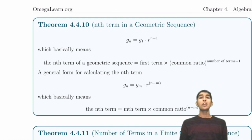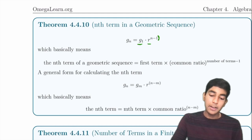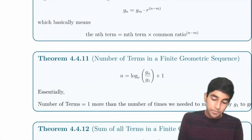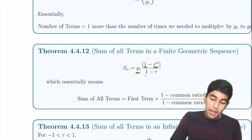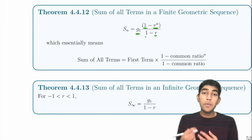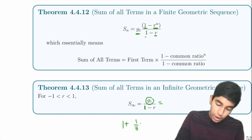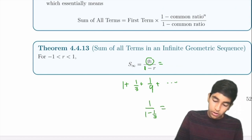Geometric sequences: the nth term is a₁ × r^(n−1). The sum of n terms is a₁ × (1 − rⁿ) / (1 − r). For an infinite geometric series with |r| < 1, the sum is a₁ / (1 − r). For example, 1 + 1/3 + 1/9 + ... = 1 / (1 − 1/3) = 3/2.